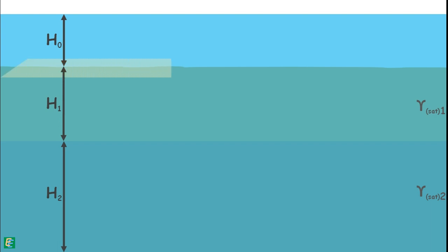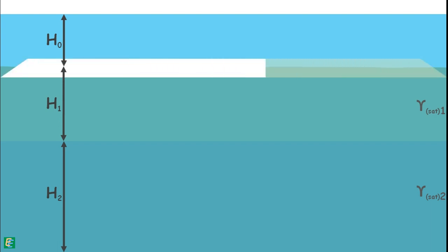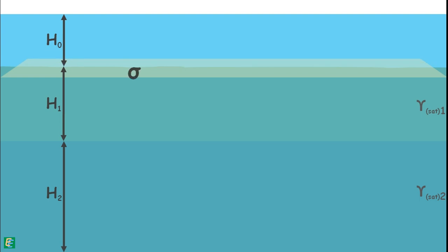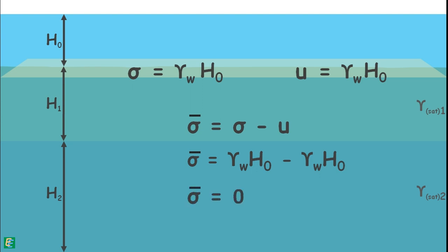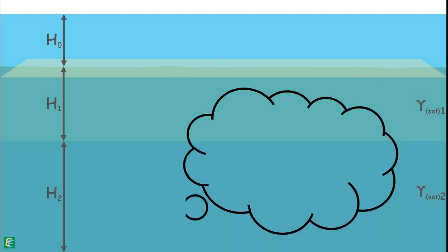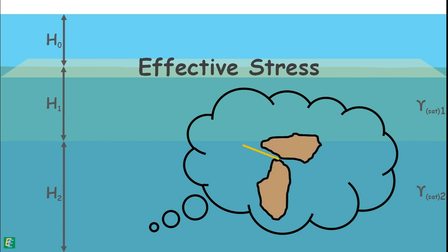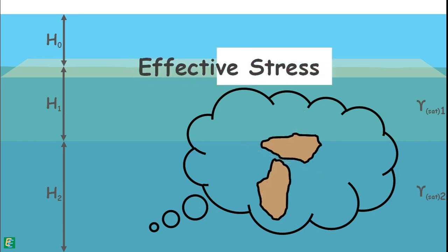We start calculating the effective stress on the plane section at the surface of the soil. On this plane, the downward stress is caused by the weight of material above, which here is water only. So total stress on this plane is unit weight of water multiplied by the height of the water layer H0. The pore water pressure on this plane caused by the water above is also gamma_w multiplied by H0. Hence, effective stress is total stress minus pore water pressure — both are equal, so effective stress is zero. This makes sense because effective stress is the stress transferred at the contact of soil particles, but above our plane of consideration there are no soil particles present, so no inter-particle force transfer, hence effective stress is zero.